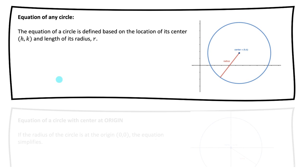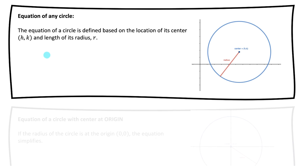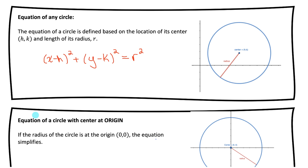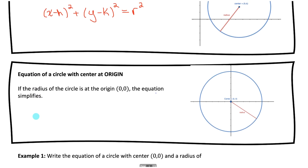For any circle that can be centered anywhere, we call the center point H, K. The relationship between any XY point and the radius is: x minus h squared plus y minus k squared equals r squared. If the circle is centered at the origin, that makes the h and k values zero, which simplifies the equation to just x squared plus y squared equals r squared.